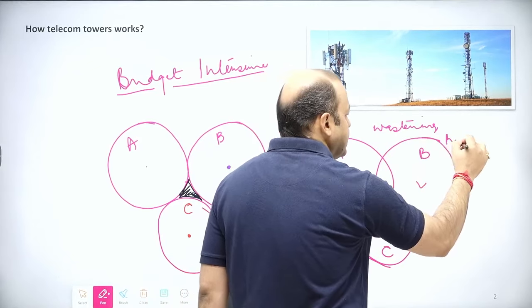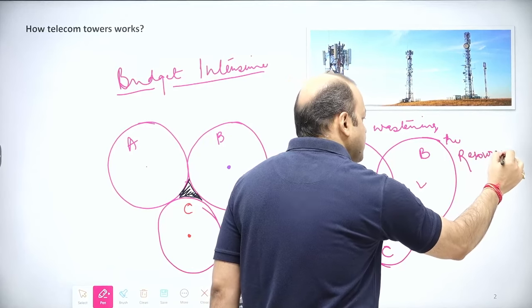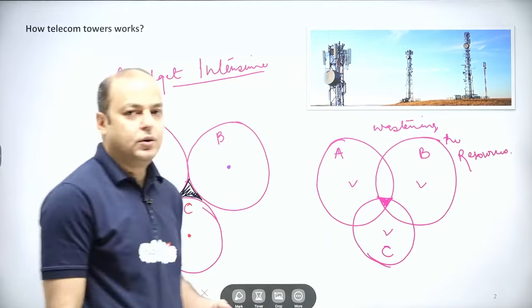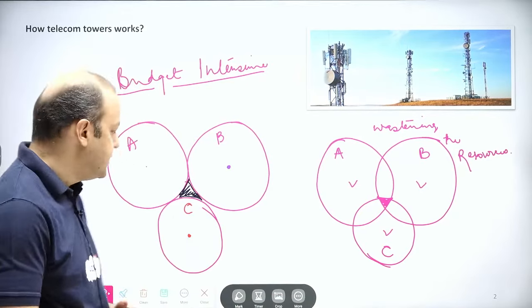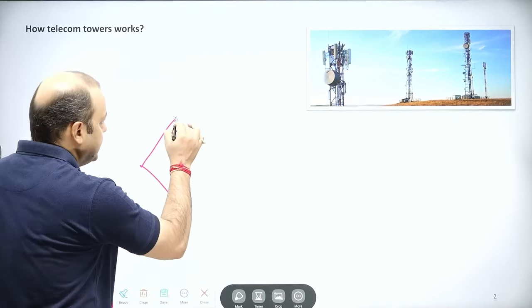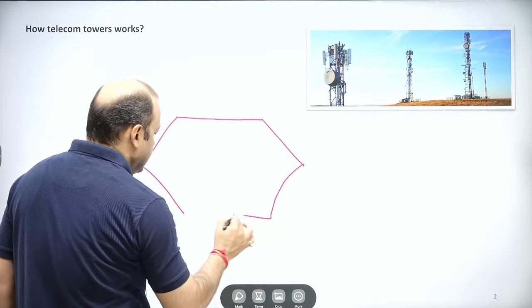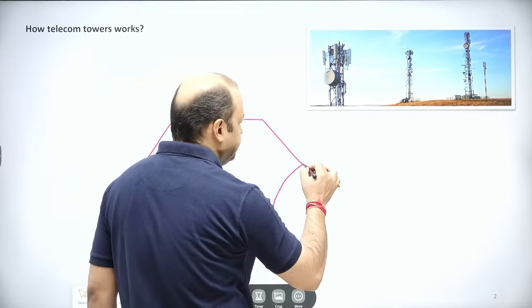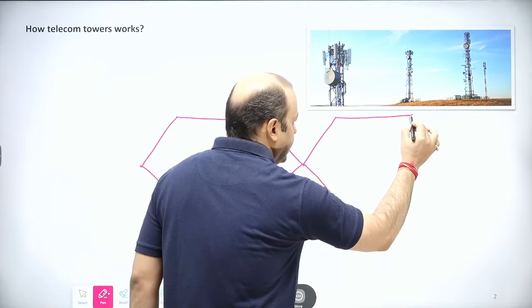Now the question is, if these two processes are not feasible, what is the feasible method? So actually what is done—a structure like these are made, like a honeycomb structure.